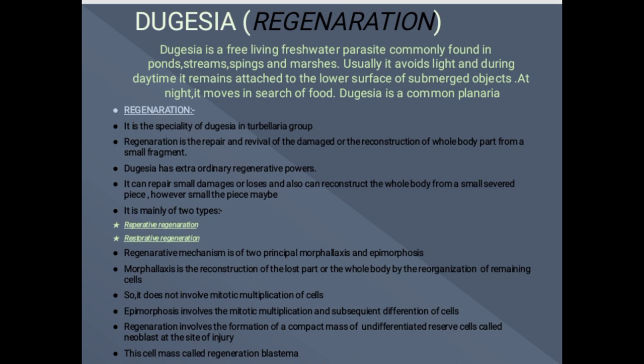Regeneration involves the formation of a compact mass of undifferentiated reserve cells called neoblasts at the site of injury. This cell mass can also be called the Regeneration Blastema.